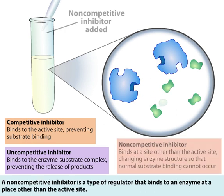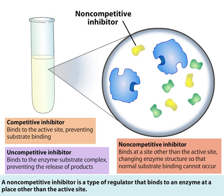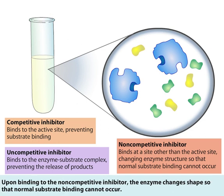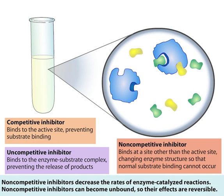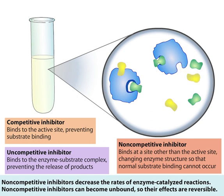A noncompetitive inhibitor is a type of regulator that binds to an enzyme at a place other than the active site. Upon binding to the noncompetitive inhibitor, the enzyme changes shape so that normal substrate binding cannot occur. Noncompetitive inhibitors decrease the rates of enzyme-catalyzed reactions. Noncompetitive inhibitors can become unbound, so their effects are reversible.